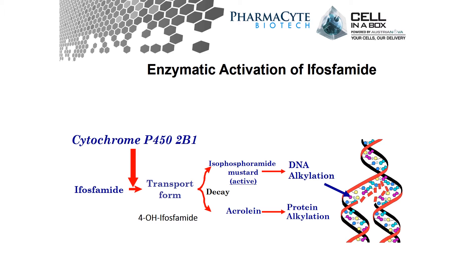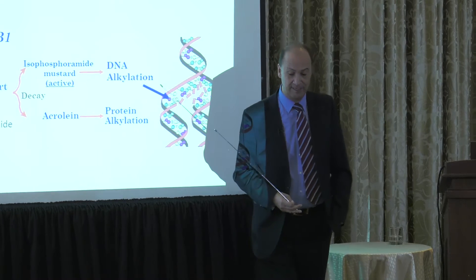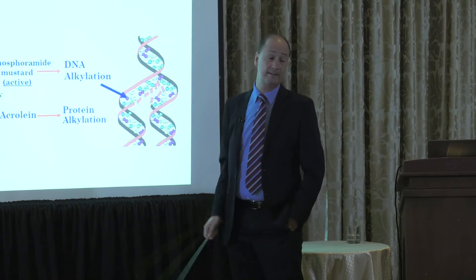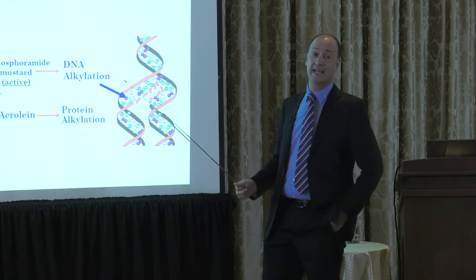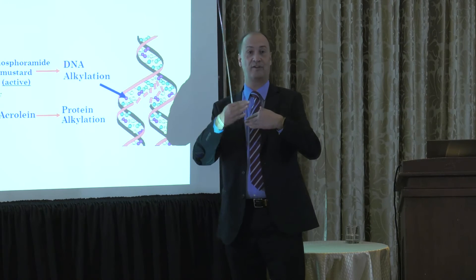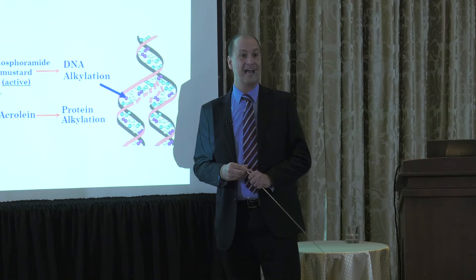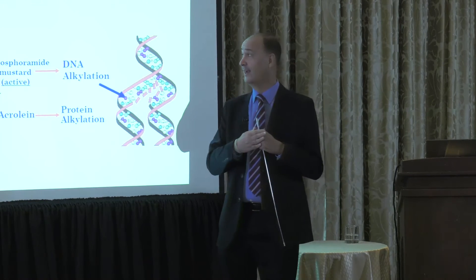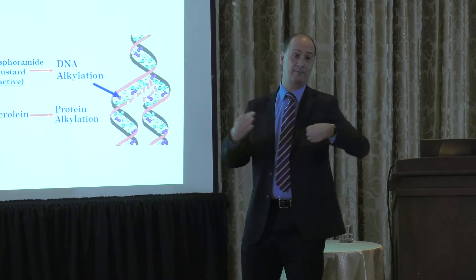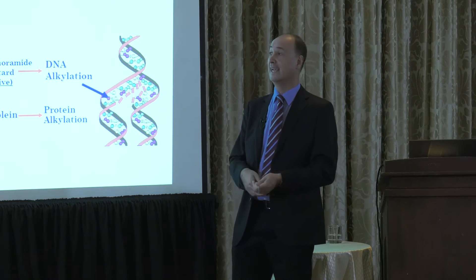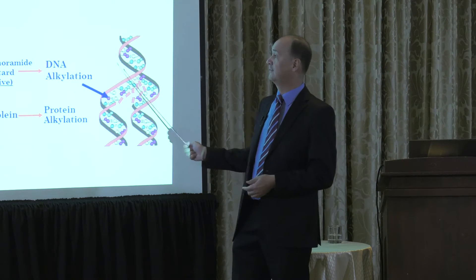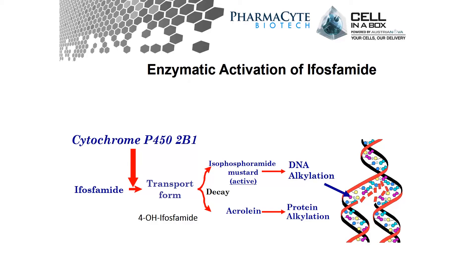This 4-hydroxy form is very short-lived and spontaneously decays into two components. One is phosphoramide mustard, which is generally recognised as being responsible for anti-tumour activity. It causes DNA alkylation — it causes that double helix structure to be bonded together. Normally in cells that has no effect, unless a cell tries to divide. When a cell divides, it is not able to separate its DNA strands, not able to replicate its DNA, and it's shunted into cell death. The second component, acrolein, is generally accepted to cause side effects by protein modifications.